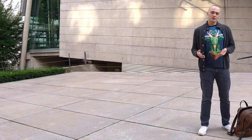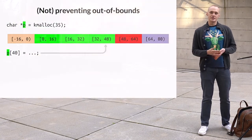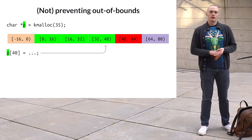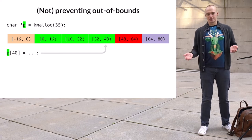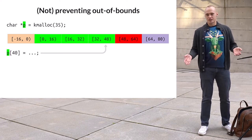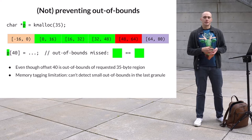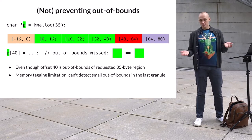There is another type of out-of-bounds access that MTE misses: accesses to the last valid granule that go past the requested object size. In our example, this happens if the kernel accesses offsets from 35 to 47. Taking offset 40 as an example — this ends up in the last granule marked with the same tag as the pointer. Therefore, this access will not produce an MTE exception. Such accesses are bugs, but MTE cannot detect them.